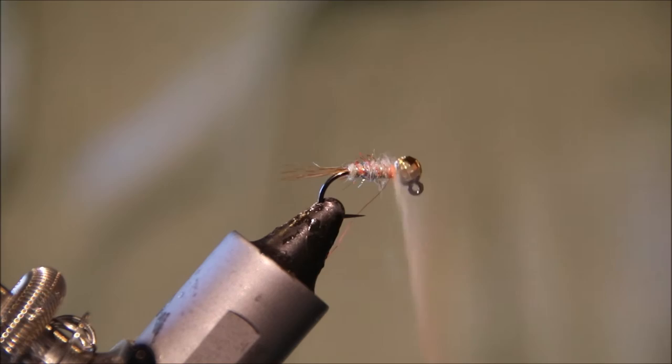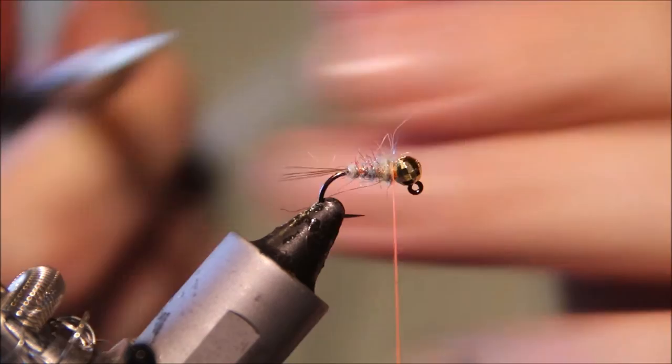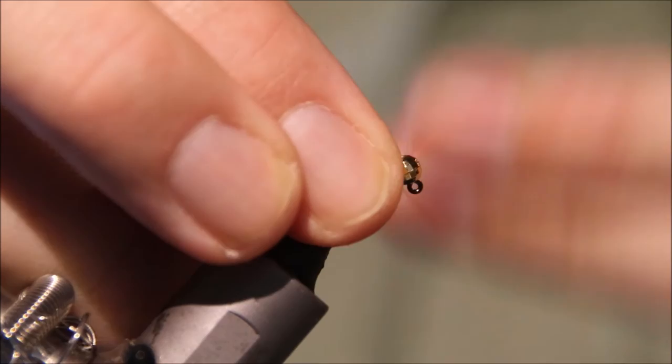Then you can come in with that extra wee bit of dubbing there, and that does your thorax. Any fibers that you think are just a wee bit too long, just trim them away.